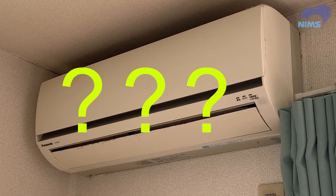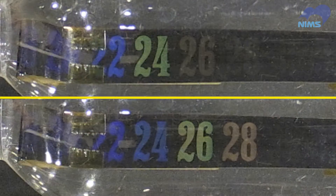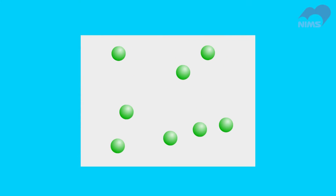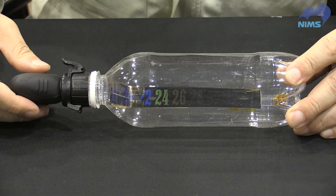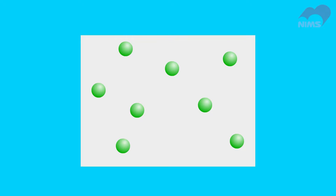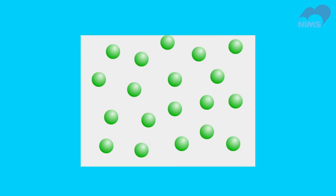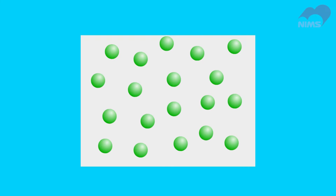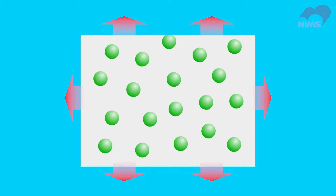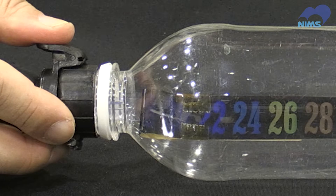Why does the temperature of the air in the bottle change with the pressure? We know that the air molecules in the bottle are moving actively. As we push more air into the bottle, the molecules become more crowded, restricting their motion. The bottle releases excess energy equivalent to the reduction in the molecules' kinetic energy.